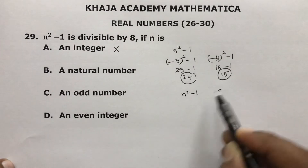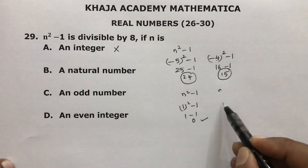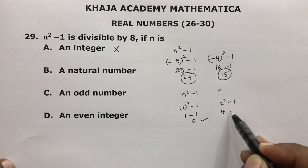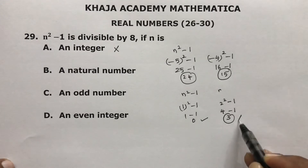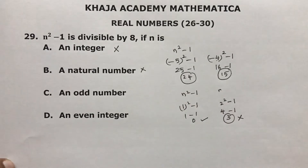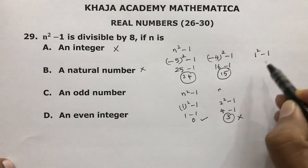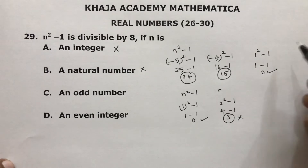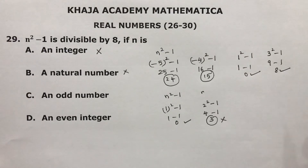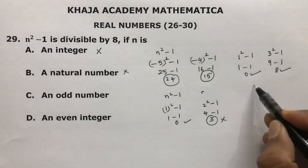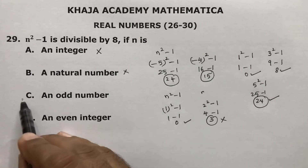Now take odd numbers. 1 squared minus 1 is 0, which is divisible by 8. Next odd number 3: 3 squared minus 1 is 9 minus 1 which is 8, and 8 is divisible by 8. Next, 5 squared minus 1 is 25 minus 1 which is 24, and 24 is divisible by 8. So the correct option is C — odd number.